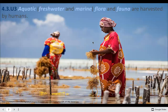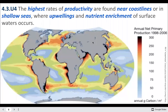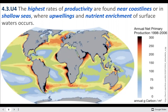Aquatic systems, which includes both freshwater and marine or oceanic-based flora and fauna, are harvested by humans. The highest rates of productivity or growth are found near coastlines or in shallow seas where upwellings and nutrient enrichment of surface water occurs. Upwelling is when those nutrient-rich waters get forced up to the surface, and the excess nutrients allow phytoplankton to reproduce and expand in their productivity. You can see net primary productivity really concentrated in coastal areas, and also around islands like the Galapagos, which get a lot of upwelling and therefore a lot of life.